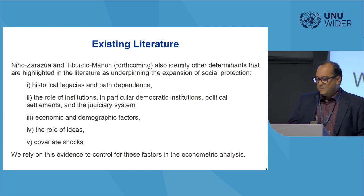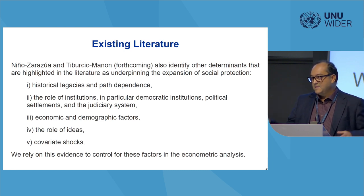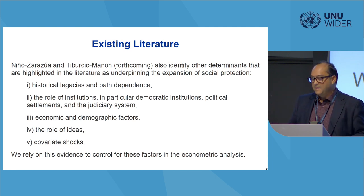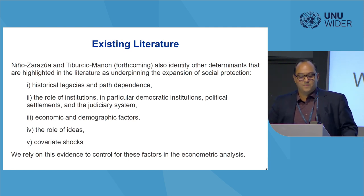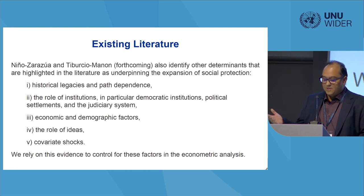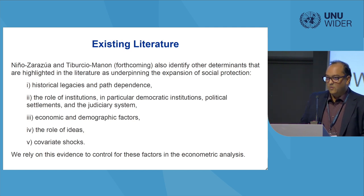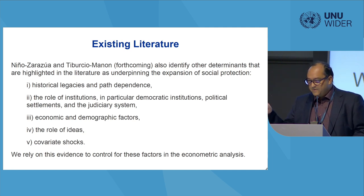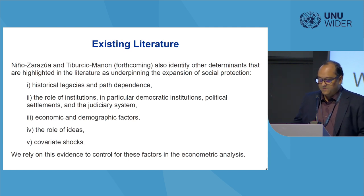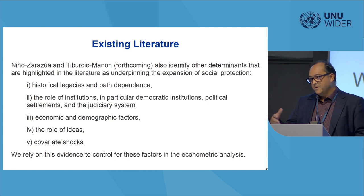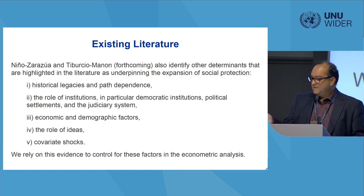Some of these studies also highlight a number of determinants, and we explore the information that the literature highlights to control for specific dimensions that are reported to affect the expansion of social protection in the global south. These are related to historical legacies and path dependency, the role of institutions — in particular democracy — the role of demographic dynamics, for example HIV in southern Africa, the role of ideas, and coverage shocks. In Latin America, for example, financial crises were determinant in making certain decisions back in the late 1990s. All those kinds of factors are controlled in our specifications.